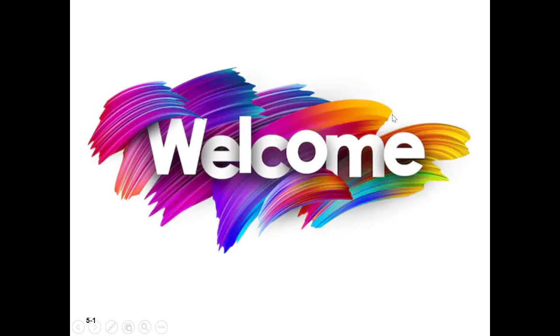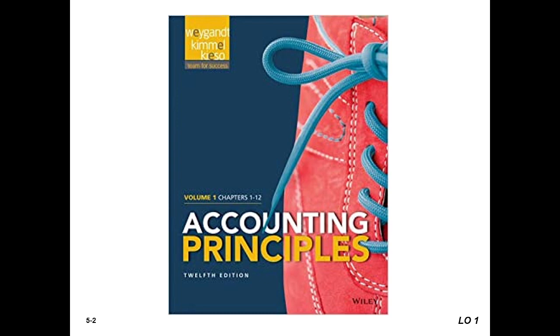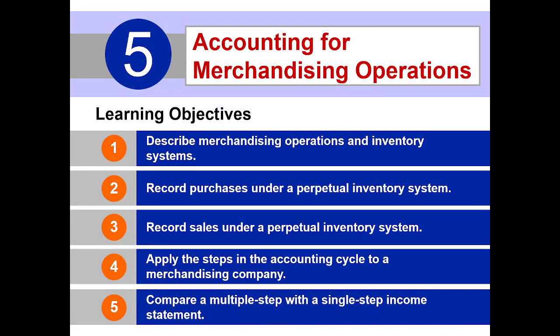Welcome everyone. Today we discuss accounting for merchandising operations, following the textbook 'Accounting Principles' by Weygandt, Kimmel. The learning objectives for Chapter 5 include: describing merchandising operations and inventory systems, recording purchases and sales under the perpetual inventory system, applying the accounting cycle to a merchandising company, and comparing multi-step with single-step income statements.